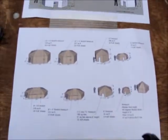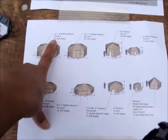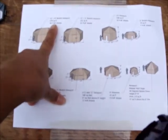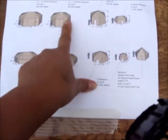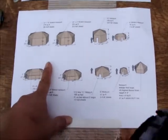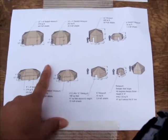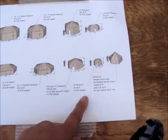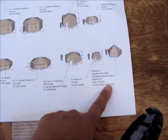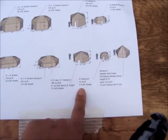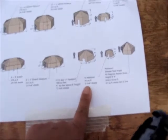8-foot by 8-foot stretch hexayurt. 26 4-foot by 8-foot sheets. They're just taped together with packing tape or something like that. Here's the smallest one left. 6-foot hexayurt.